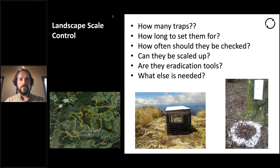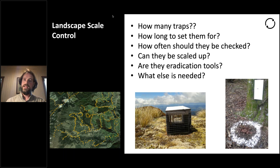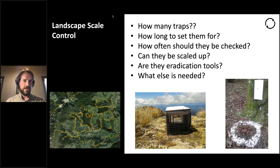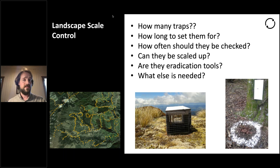When I say landscape control, what do we actually mean? There's been a lot of trapping and poisoning over community groups, councils, and the Department of Conservation — they generally have questions about how many traps are required, how long to set them, how often they should be checked. But what I'm hoping to do today is look at whether this can actually be scaled up. Predator Free 2050 wants to get them all out of the country in the next 30 years. How do we move from a community group doing it to getting rid of them from national parks or entire islands? Are the tools we have eradication tools, or just control tools?